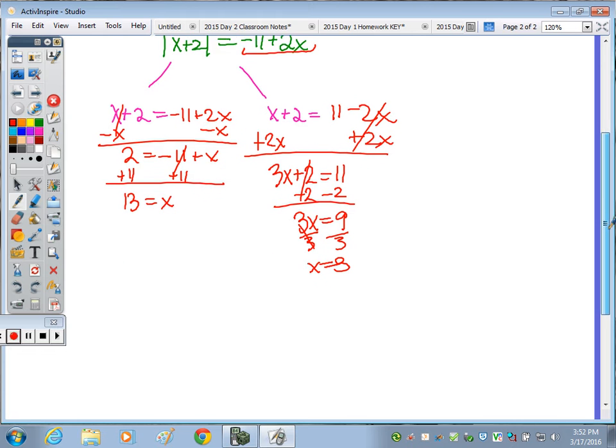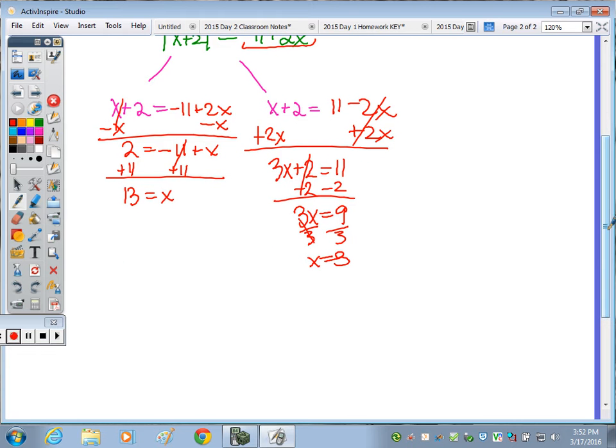Now let's check those answers in the original equation. So if I check, it would be 2 times 13 minus the absolute value of 13 plus 2. Does that equal 11? 2 times 13 is 26.